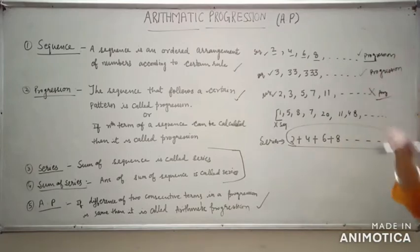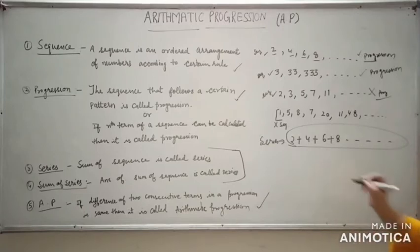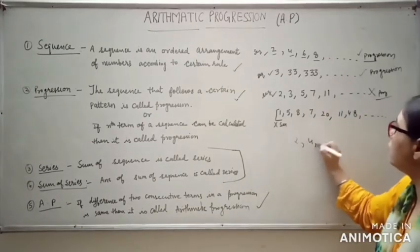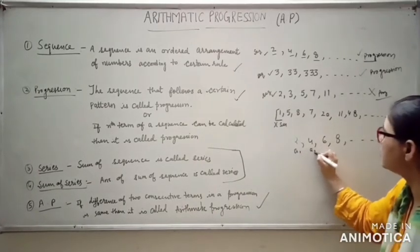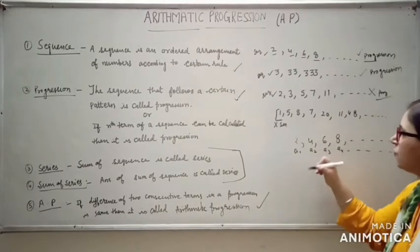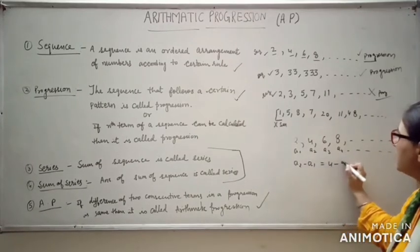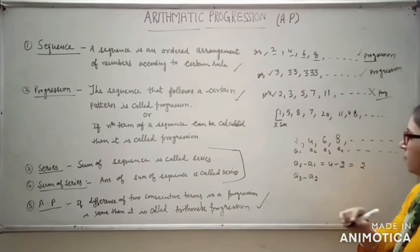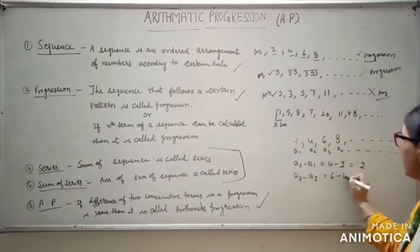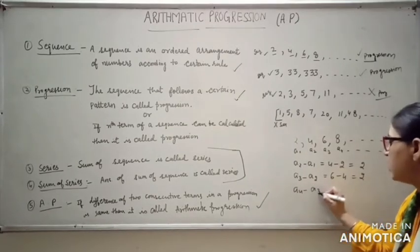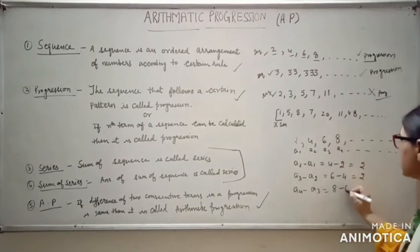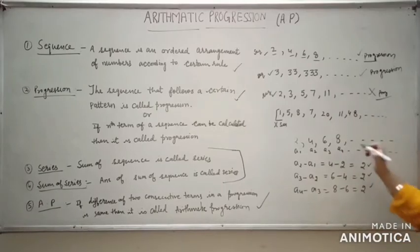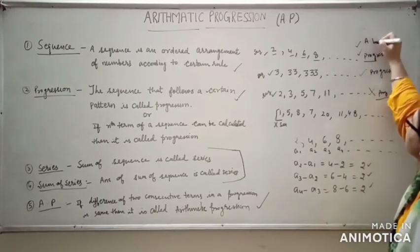Let us check which progression is an arithmetic progression. For 2, 4, 6, 8: A2 − A1 = 4 − 2 = 2; A3 − A2 = 6 − 4 = 2; A4 − A3 = 8 − 6 = 2. We can see that in all cases the difference between consecutive terms is the same, equal to 2. That is why this is an arithmetic progression.